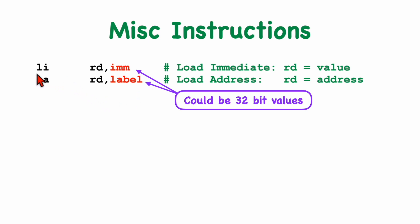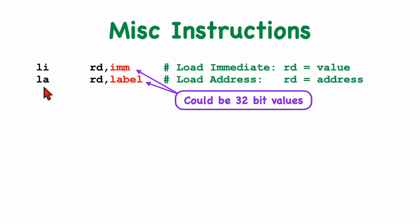You should use the load immediate instruction when the value is something the assembler knows. For addresses, they won't be known until the linker runs. After assembly, the linker places different parts of your code into memory, and only at that time will the actual values of symbolic labels — the actual memory addresses — be known. So the linker will have to deal with the load address instruction.